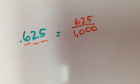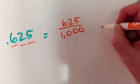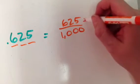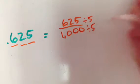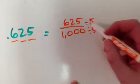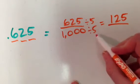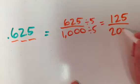And then, once I have this, I have to check and see if I can reduce it at all, which I can. I'm going to start by reducing them both by five. 625 divided by five is 125. A thousand divided by five is 200.